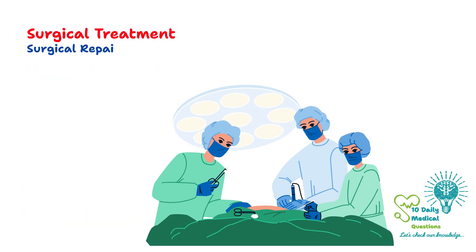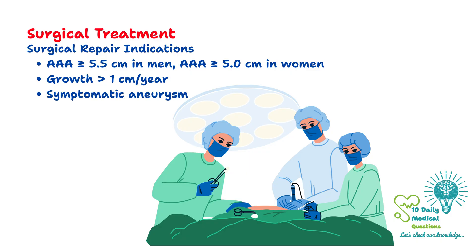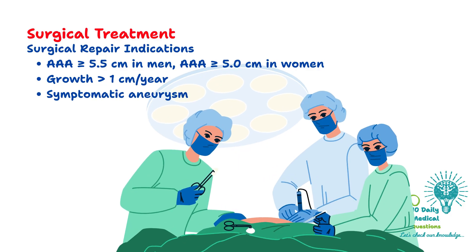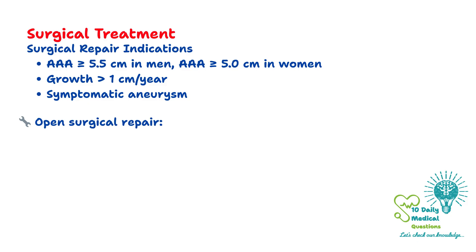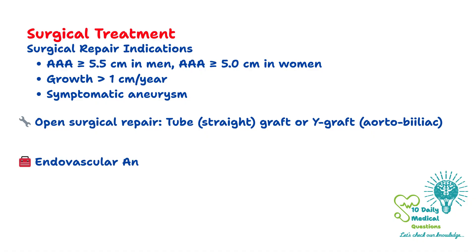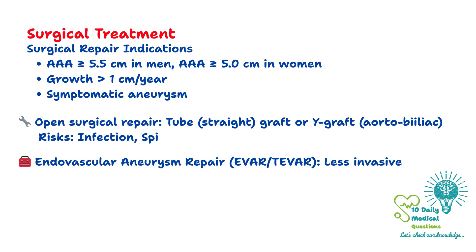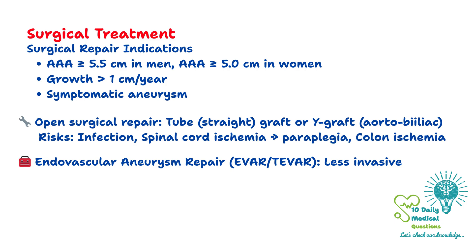Surgical repair is indicated when the aneurysm reaches 5.5 cm in men or 5 cm in women, shows rapid growth of more than 1 cm per year, or becomes symptomatic. Surgical options include open aortic repair using a tube graft or Y-shaped aortobiiliac prosthesis. Open surgical repair is more invasive and carries risks such as infection, spinal cord ischemia with potential paraplegia, and colonic ischemia.